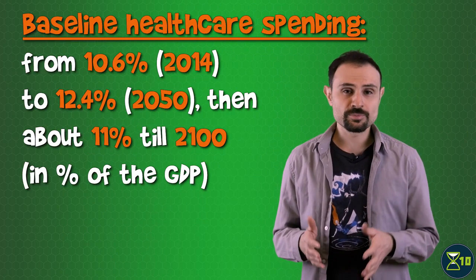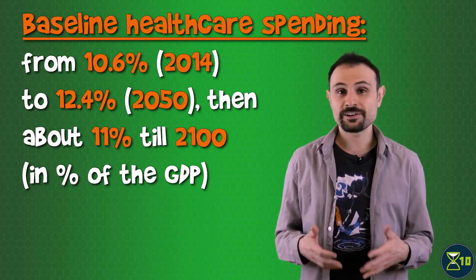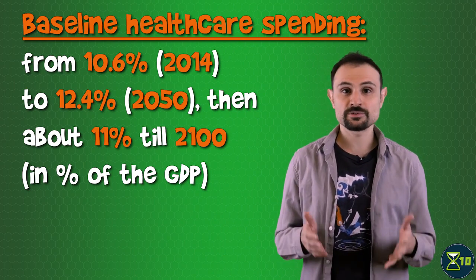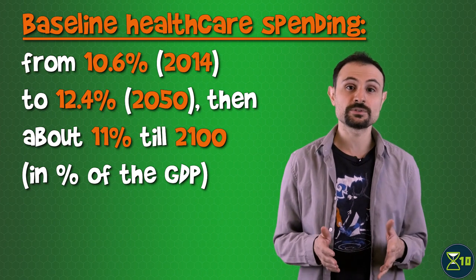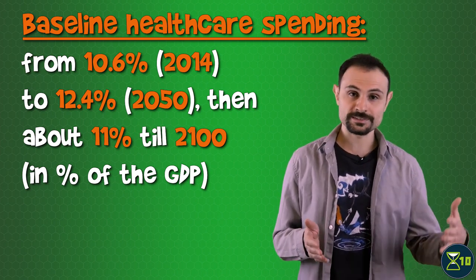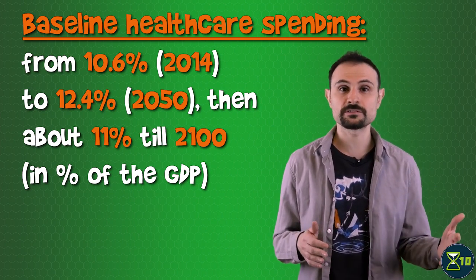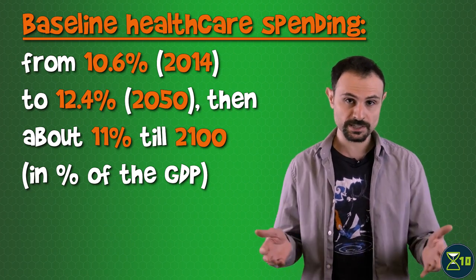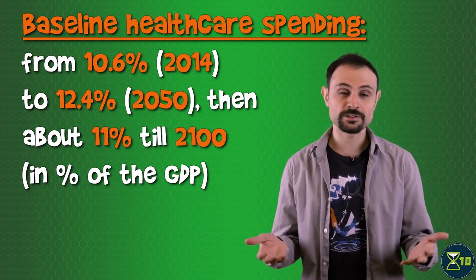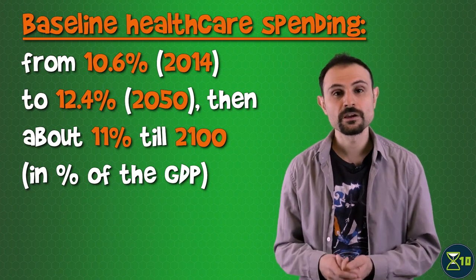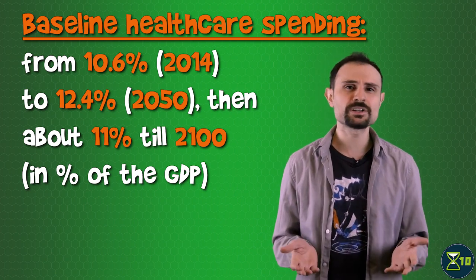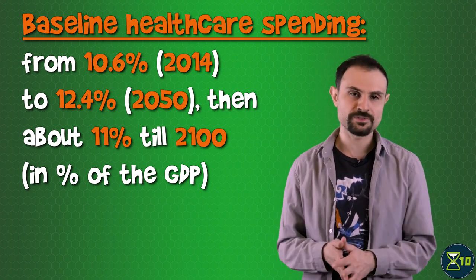The researchers then looked into the expected healthcare costs in their baseline and negsense scenarios. The scenario without rejuvenation predicts a gradual increase in healthcare spending related to disease and mortality between 2014 and 2050, from 10.6% to 12.4% of the Global Gross Domestic Product, or GDP, the total value of all goods and services produced in a year. After that, global spending pretty much stabilizes around 11-something percent.